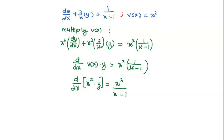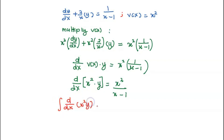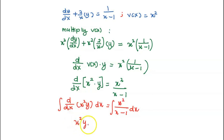Next is the integration. When we integrate both sides of the equation with respect to x, the integral of d over dx of x squared y dx gives us x squared y on the left, and we have the integral of x squared over x minus 1 dx on the right-hand side.